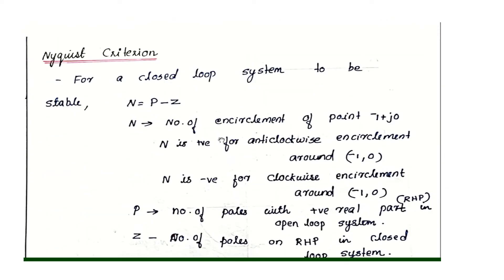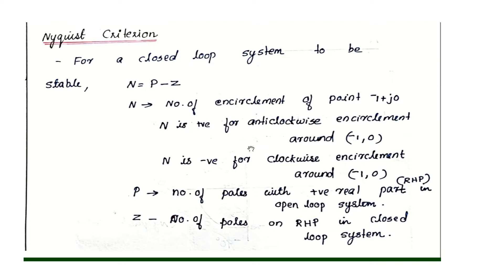The Nyquist criterion states that N equals P minus Z, where P is the number of open loop poles with positive real parts in the right half plane, i.e., the denominator of the open loop transfer function G(s) set to zero gives the poles. P counts the poles with positive real parts.